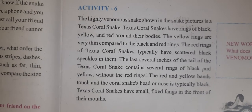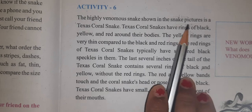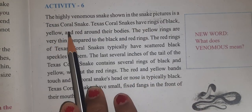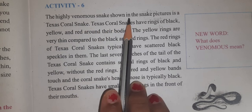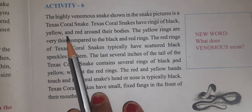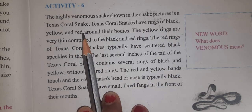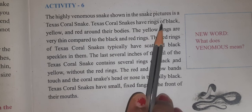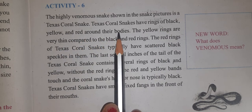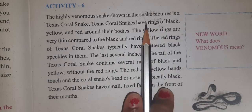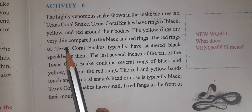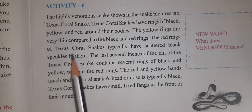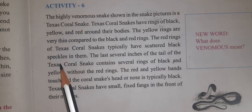Now we come to Activity 6. The highly venomous snake shown in the picture is a Texas coral snake. Texas coral snakes have rings of black, yellow, and red around their bodies. The yellow rings are very thin compared to the black and red rings. The red rings of Texas coral snakes typically have scattered black speckles in them.